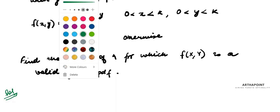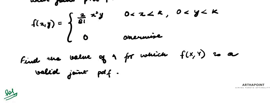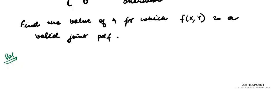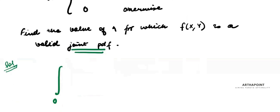So see, because I have to keep this as a valid joint pdf, I know that when I integrate over all values of x, so x goes from 0 to k and all values of y, y also goes from 0 to k, the probability density function dx dy integration should give me 1.